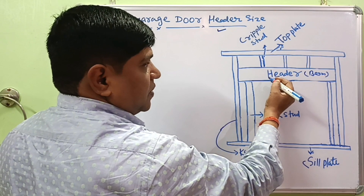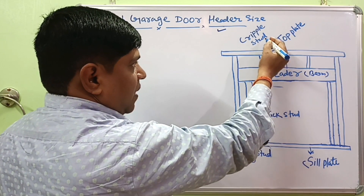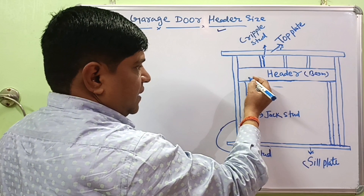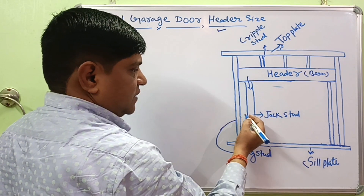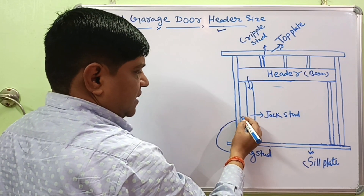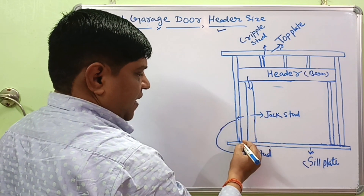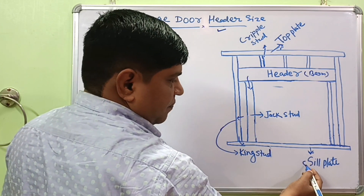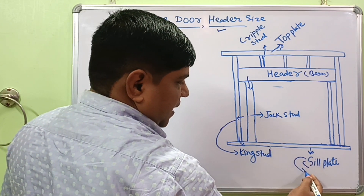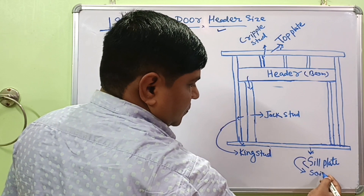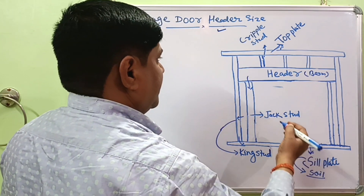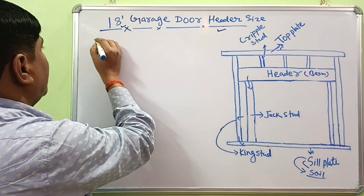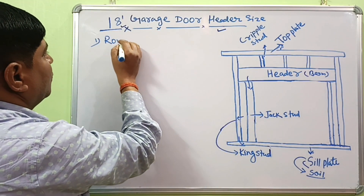Above the header, this one is the triple stud, and finally the top plate. The significant role of the header is to collect the load coming from the structure above, transfer it to the jack stud, and the jack stud transfers it to the king stud. Only the king stud transfers its load to the sill plate, and the sill plate transfers the loads to the soil.